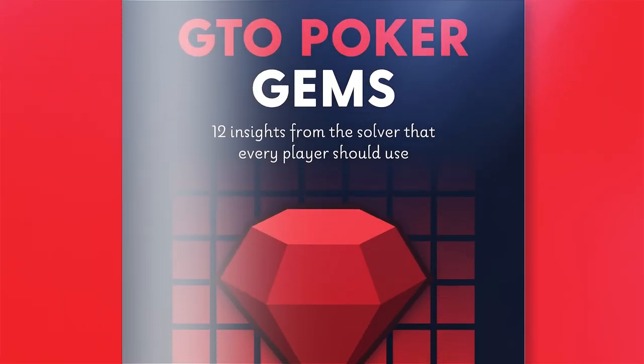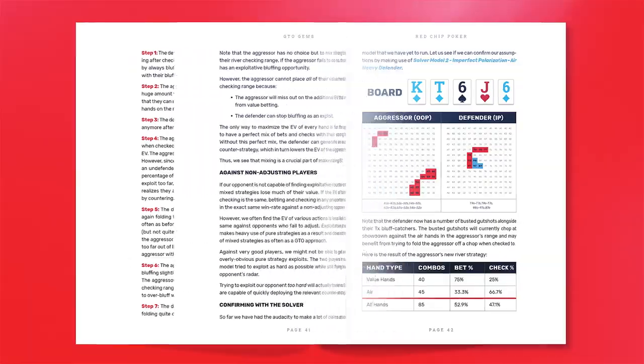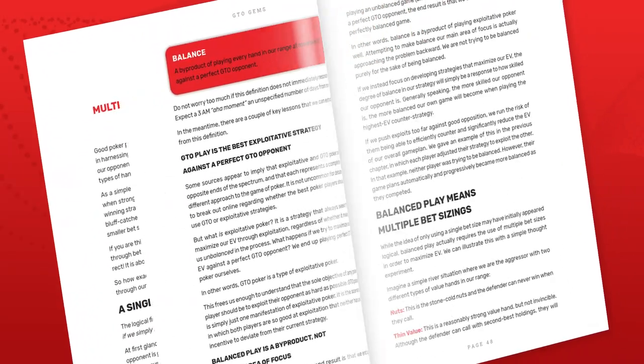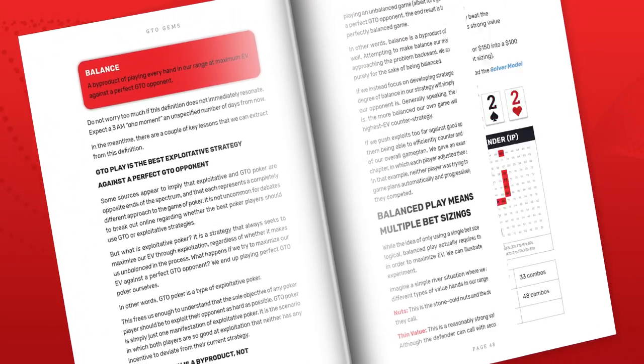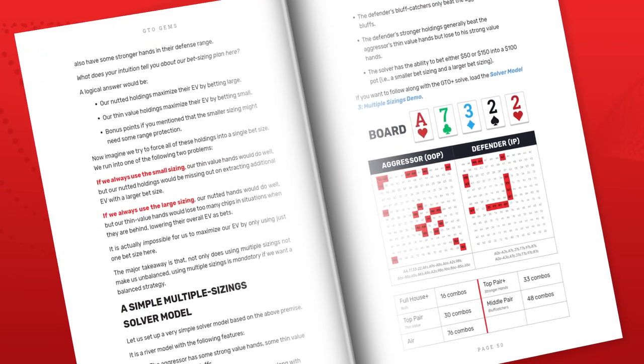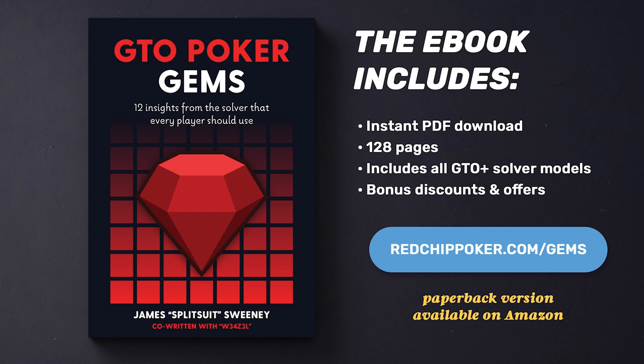If this is something you're interested in learning a lot more about, I would definitely suggest picking up my brand new book, GTO Poker Gems. It goes through tons more of this material and gives you actionable insights from years of GTO exploration and solver work — meant to be a concise breakdown rather than slogging through endless hours of solver output. Visit redchippoker.com/gems to pick up your copy today, or find the paperback or Kindle version on Amazon.